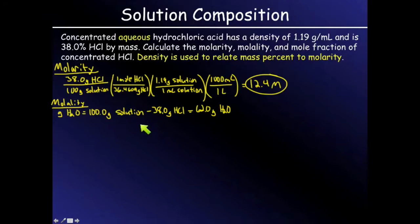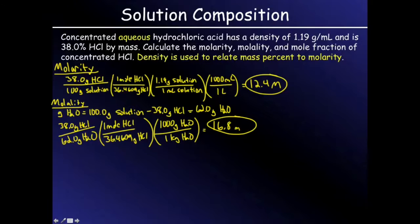So then I can take my 38 grams HCl and divide it by the 62 grams of water, and do as I did before, convert the 38 grams HCl to moles HCl, but now I will convert the 62 grams solvent, 62 grams water, to kilograms water. That will then give me my molality.